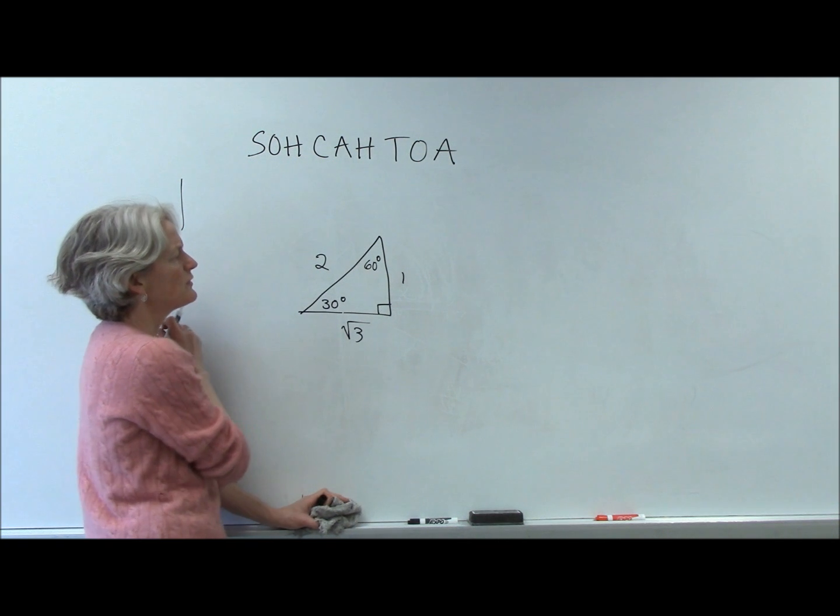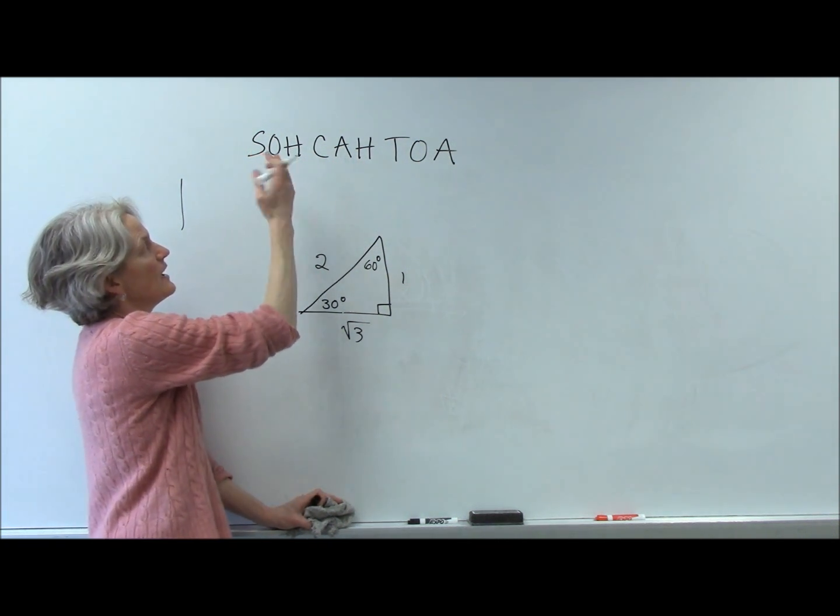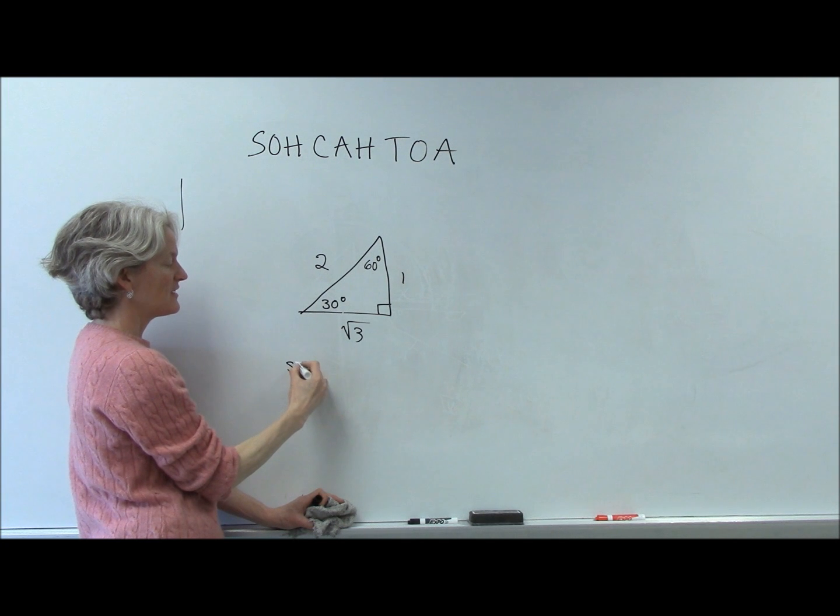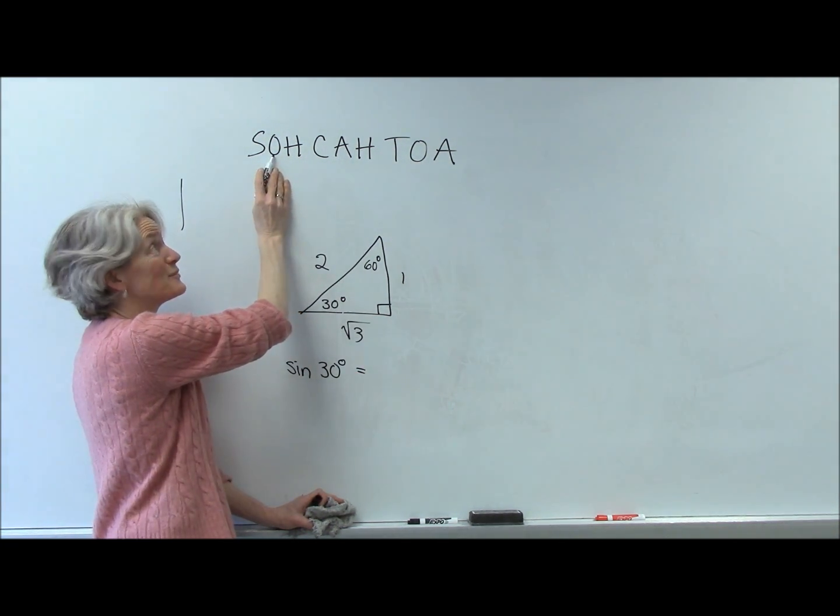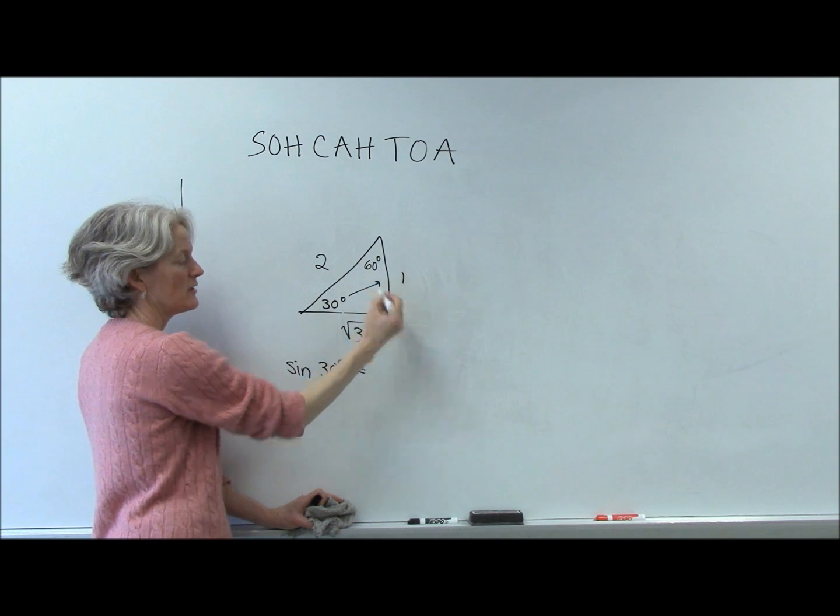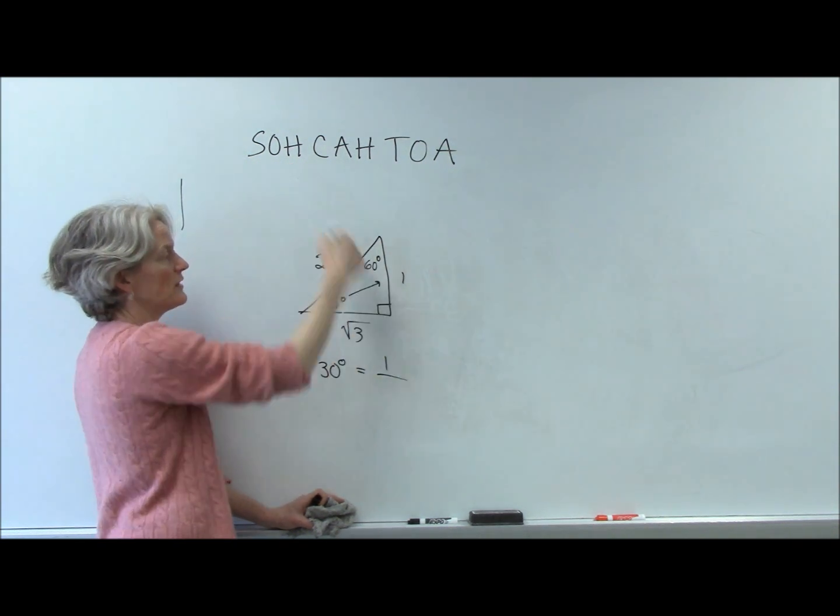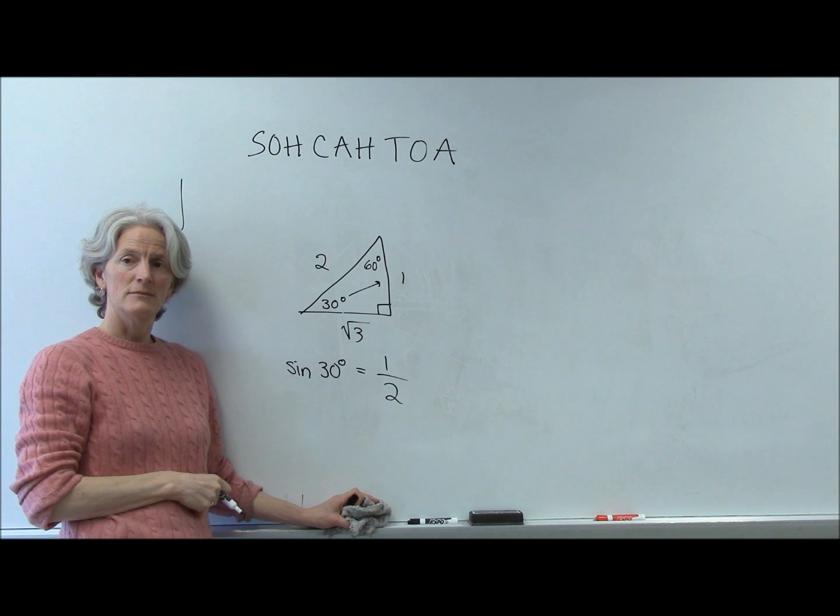So if we use, let's say, sine, we remember that the sine of 30 degrees would be the side opposite that angle, 1, over the hypotenuse, 2, right?